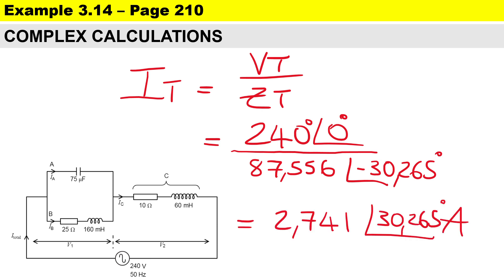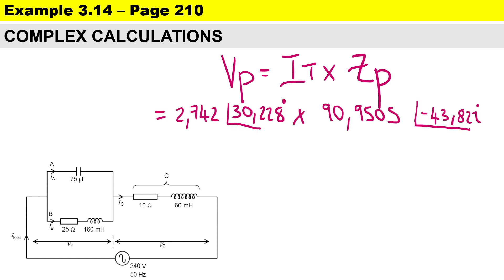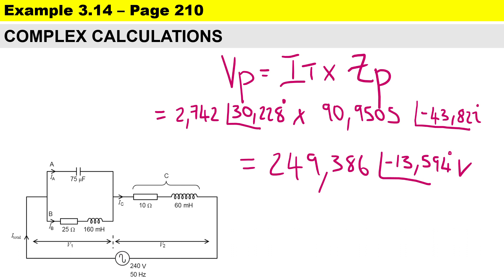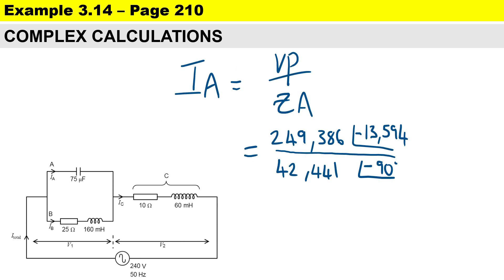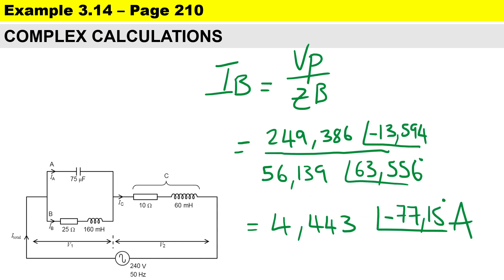We end up with 2.741 amps at an angle of 30.265 degrees. Note that the total current also equals I_C, the current through branch C. To calculate the volt drop across the parallel branch, we multiply the total current by the impedance of the parallel branch in polar format, adding angles together, giving a parallel branch voltage of 249.386 volts. We can then calculate the current in branch A and branch B.